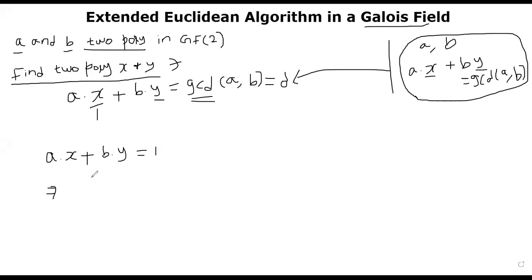A times X is equal to 1 plus B Y. In Galois field, there is no difference between plus and minus, so I can replace it by 1 plus B Y.